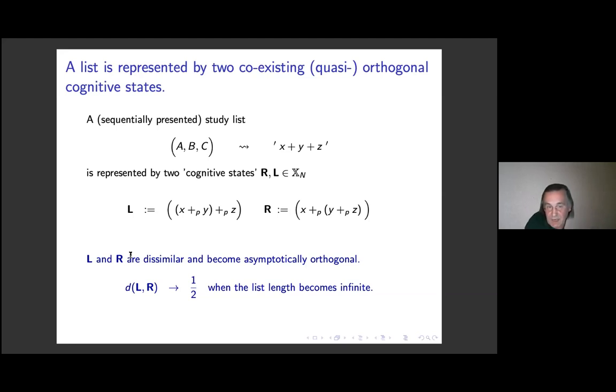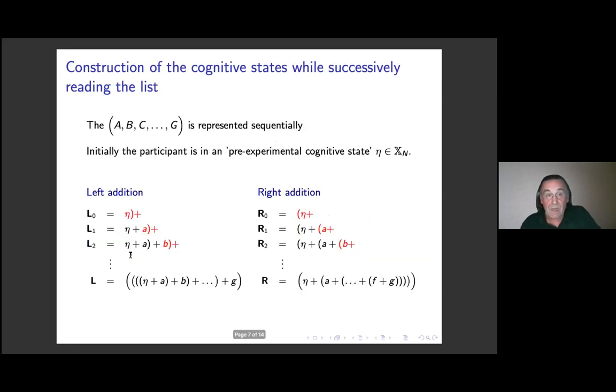The interesting thing now about these two states is, first of all, this is not a real surprise, these two states are dissimilar. Fine. But if the list length becomes infinite, these two states become orthogonal. The rate of convergence is very fast. Even when you have a list length of maybe 8 or 10, these vectors are already orthogonal.